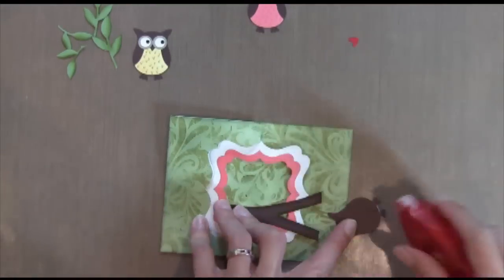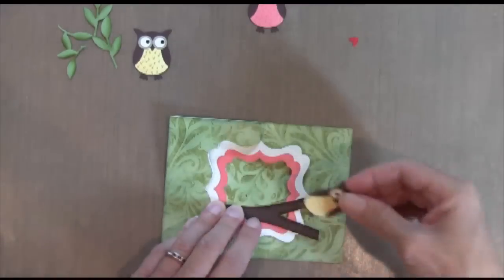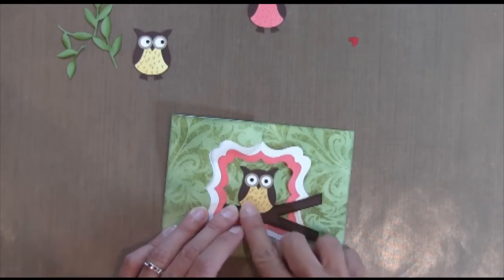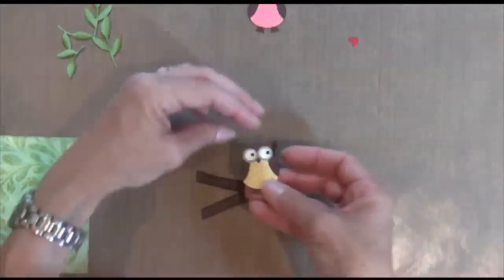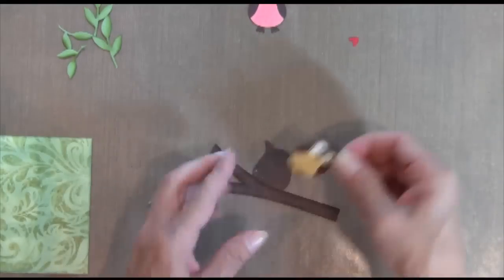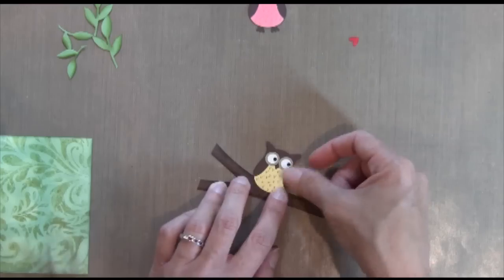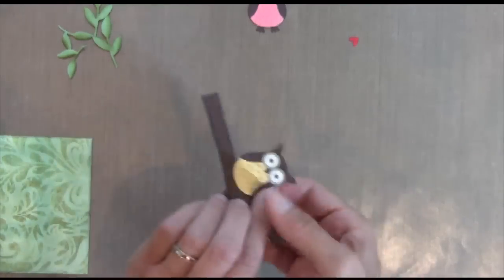All right, now it's time to put it all together. I'm just lining up my tree branch where I want it, and then I'm going to adhere with some tape adhesive. And then I'm going to take the other owl that's looking to the right, and I'm going to glue him to the back.